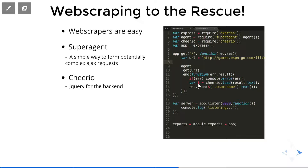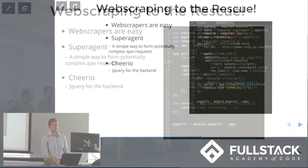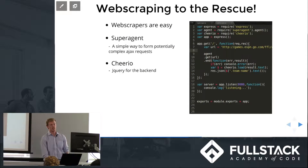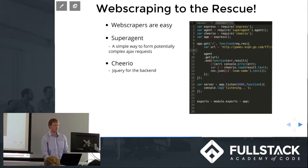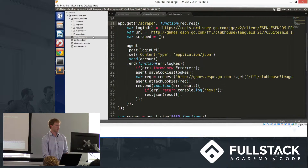This is where Cheerio comes in and kind of jQuery-ifies your result. Then right here you just res.json and send it back to your site. This URL I gave is an ESPN team homepage. There's just one element in the entire HTML that has a class of team name, so it should just send back the team name. I'll show this in action real quick.